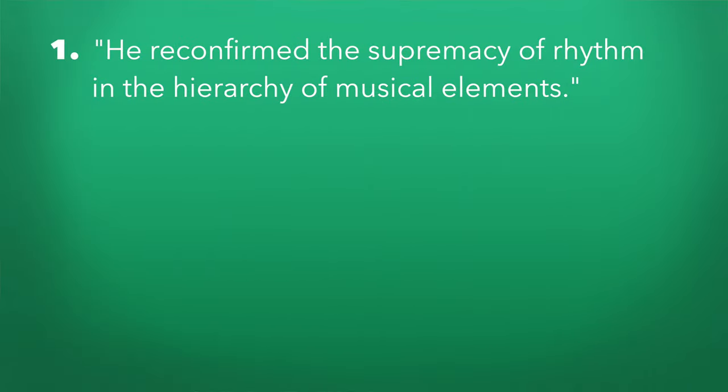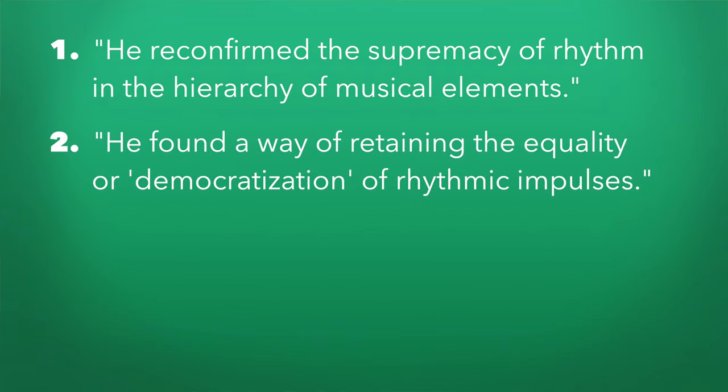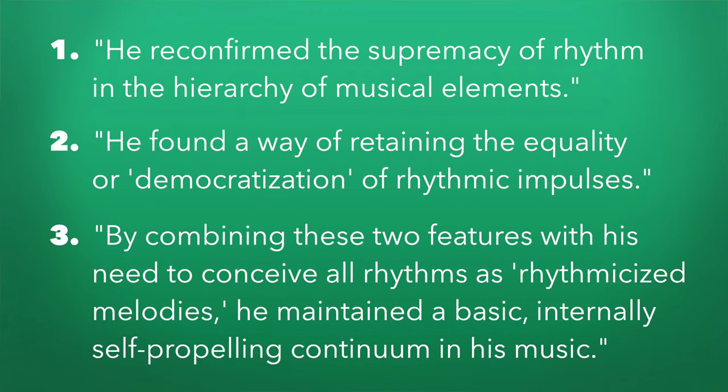This syncopation is what Gunther Schuller calls the democratization of rhythmic impulses — meaning, instead of having a strong beat and a weak beat on the one and three, you now have an emphasis on the two and four as well, so all beats are strong. This is one of the reasons why it's so important to clap on the two and four if you're listening to jazz music. Schuller says three things were accomplished by transforming against-the-beat accentuation into syncopation: one, it reconfirmed the supremacy of rhythm; two, it retained the equality or democratization of rhythmic impulses; and three, by combining these with the need to conceive all rhythms as rhythmicized melodies, it maintains a basic internally self-propelling continuum in the music. All three qualities survive in jazz as swing.